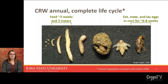Once they've wrapped up feeding, typically sometime in mid to late June, they will enter a pupal stage — just a resting stage where they undergo the big transformation from larva to adult, taking about a week. Once that pupal stage is over, they will emerge as adults, typically late June to early July. That's when we would typically see the first adult corn rootworm come out of the ground.